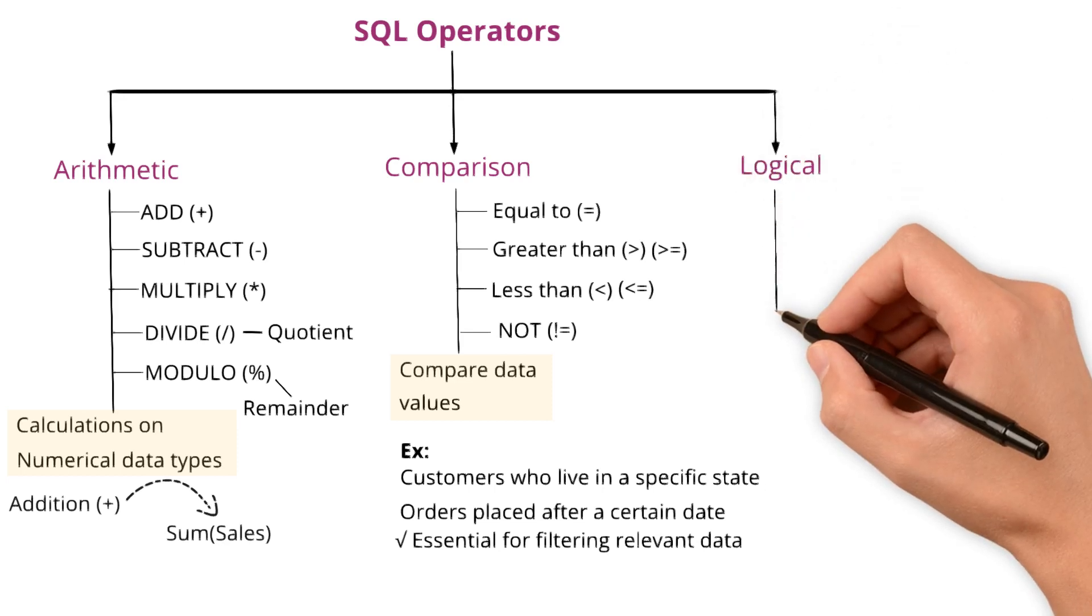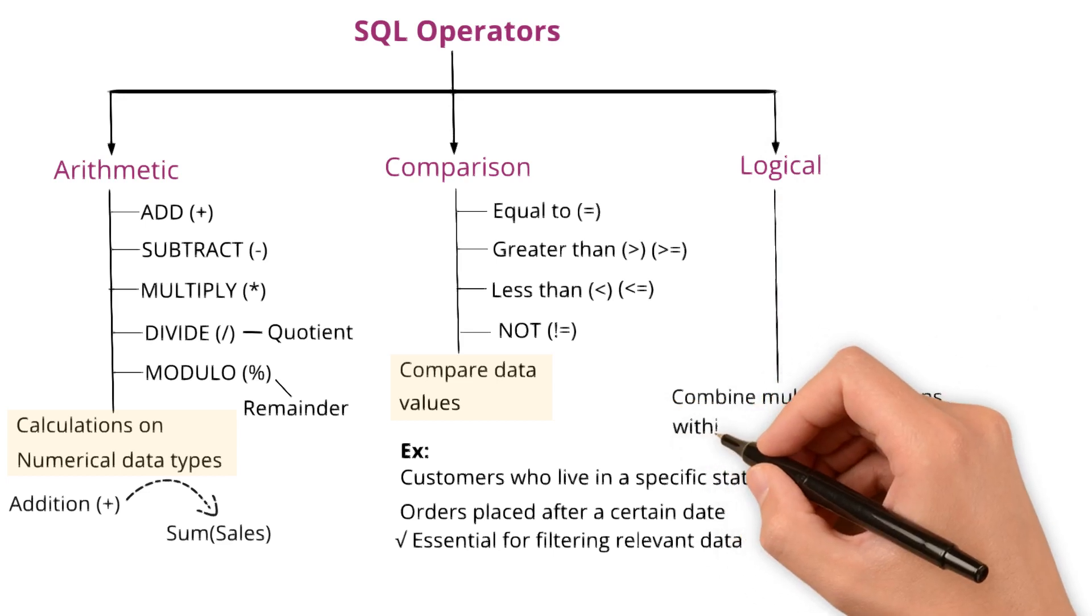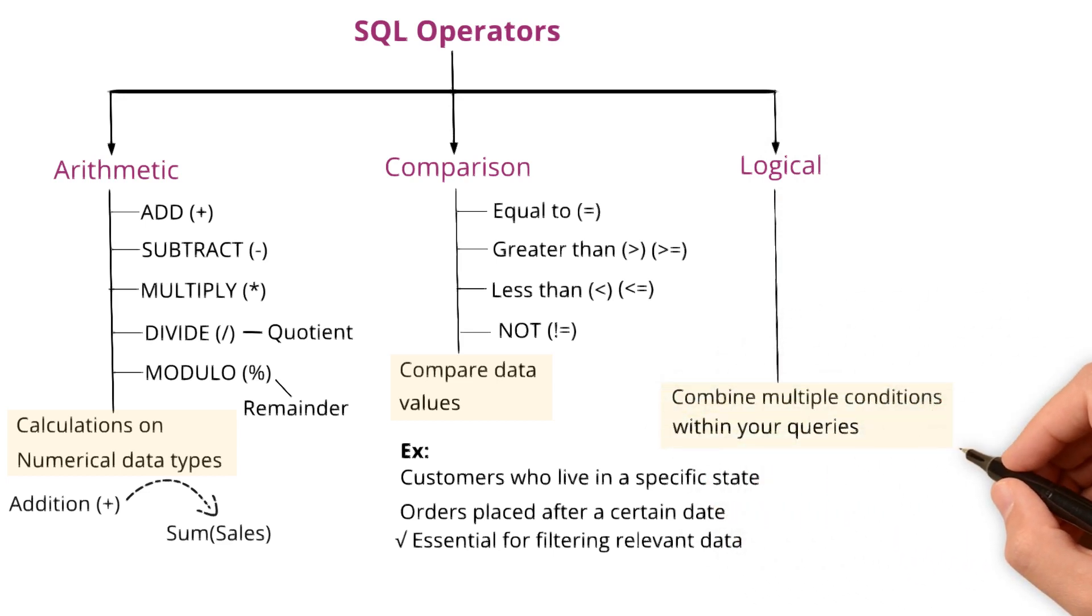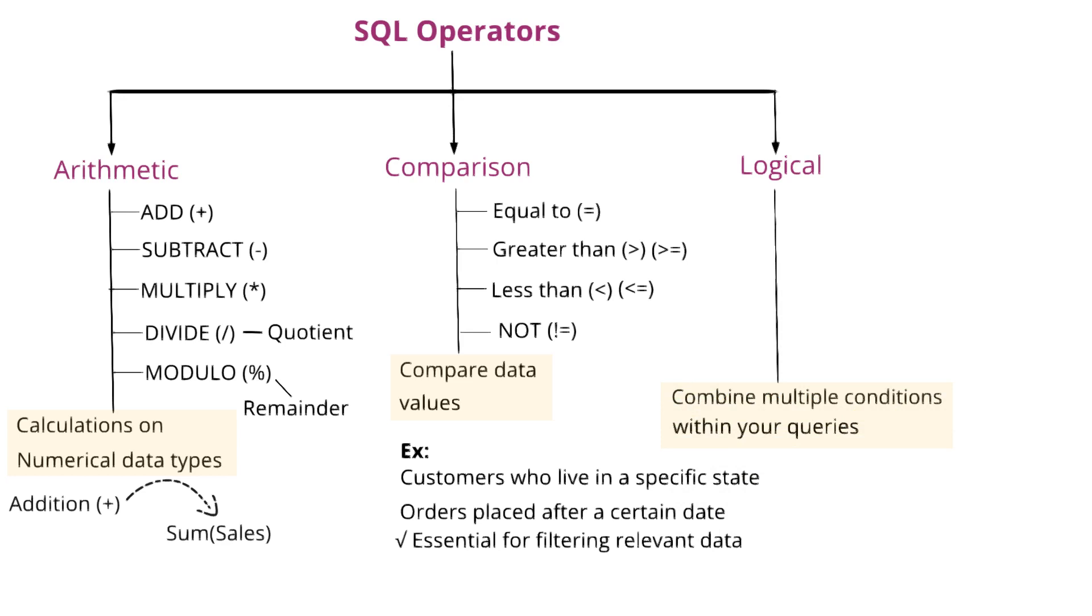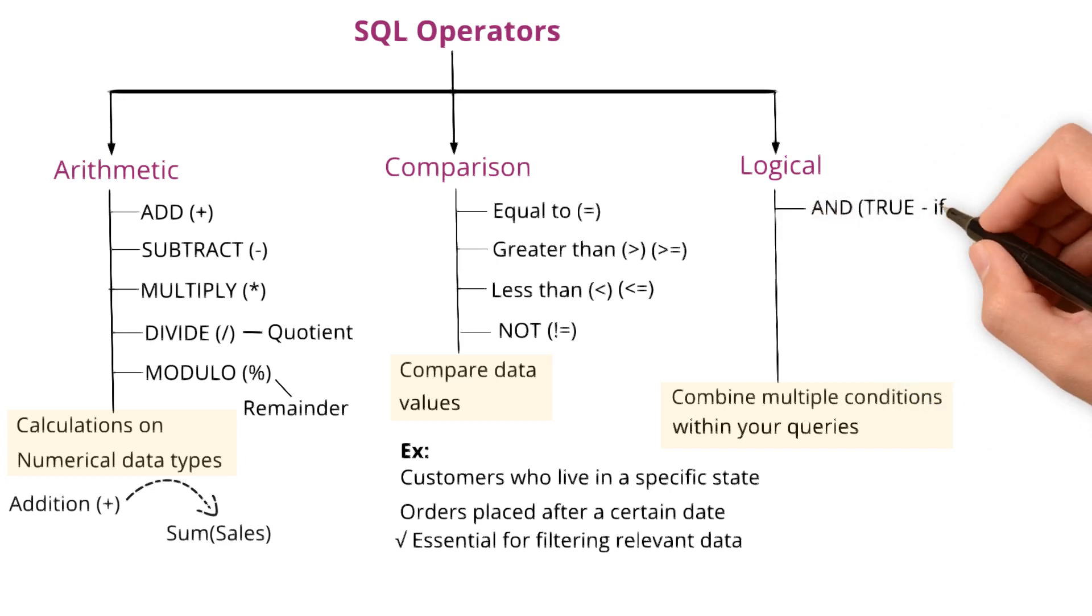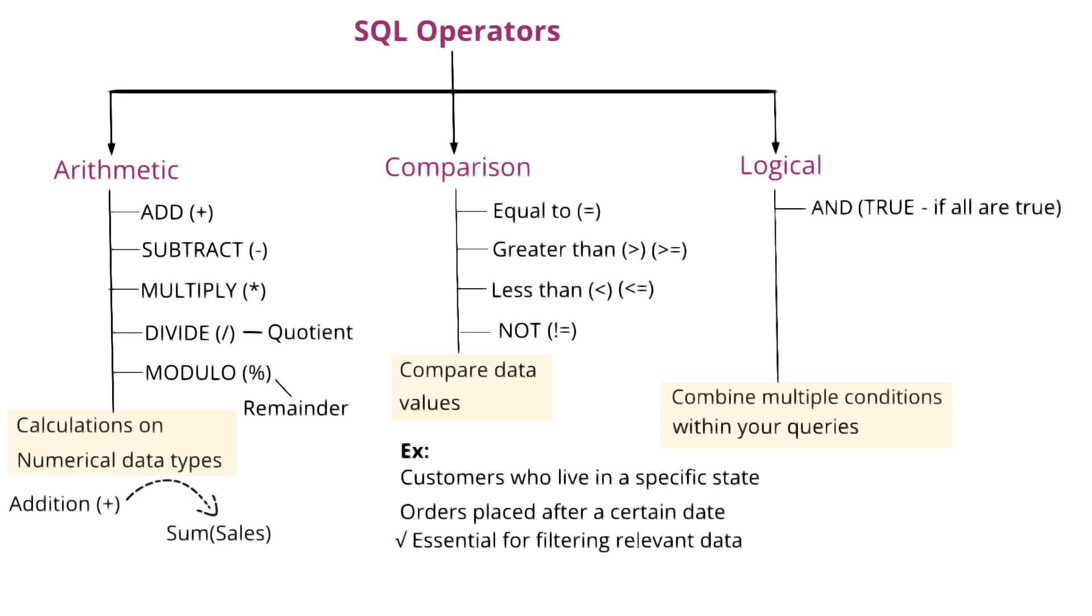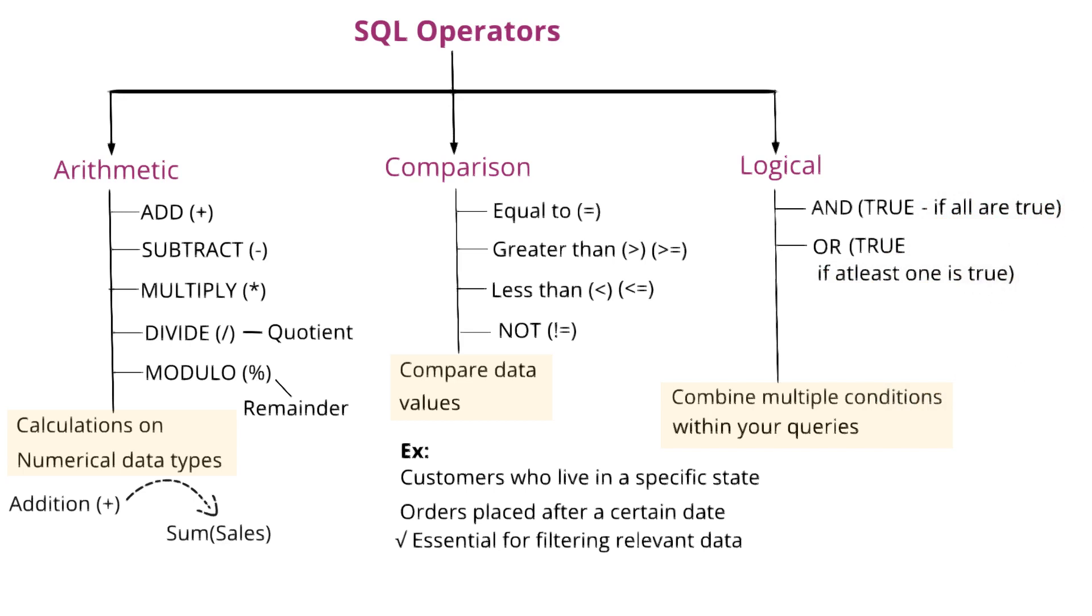Logical operators. Sometimes you need to combine multiple conditions within your queries. Logical operators come in handy for creating these complex filters. Here's how they work: AND returns true if all conditions separated by AND are true. OR returns true if at least one of these conditions separated by OR is true. NOT negates a condition, returns true if the condition is false.